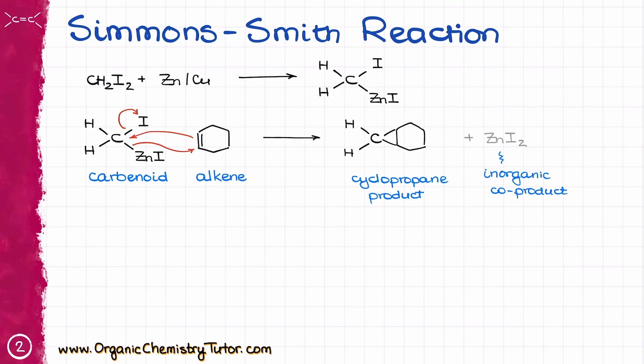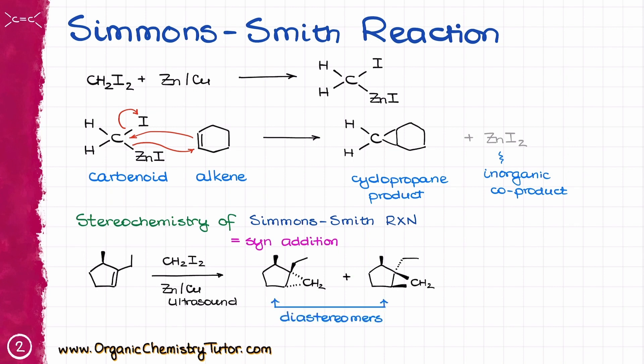So from the stereochemical perspective, this reaction is stereospecific and can be classified as a syn addition, which kind of makes sense as you can only add a CH2 group to the molecule to make a three-membered ring from just one side of the molecule. Which means that if I look at this example, for instance, I get these two products, which are diastereomers of each other.